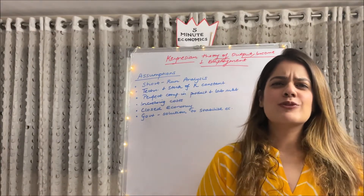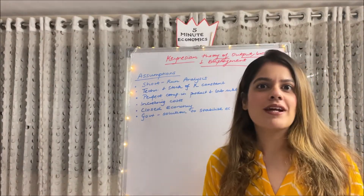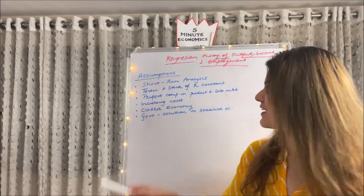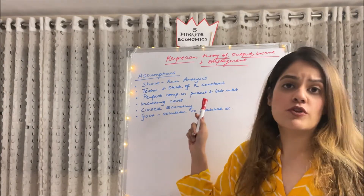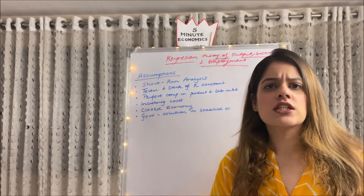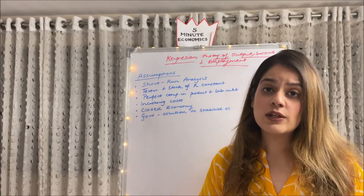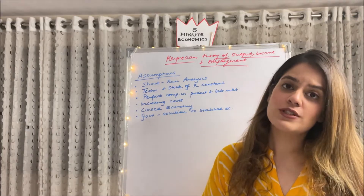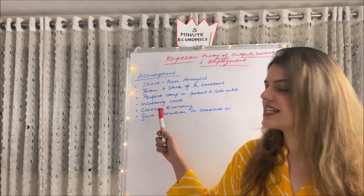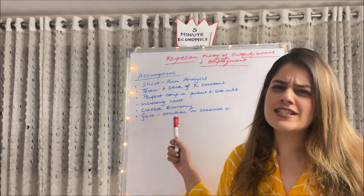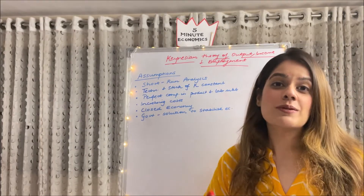Let us quickly run through the assumptions of this theory. Number one, this is a short run analysis, because Keynes believed that in the long run we are all dead. Secondly, technology and stock of capital are constant — they cannot change in the short run. Thirdly, there is perfect competition in product and labor markets. Fourthly, increasing cost: if we produce more, we incur more costs — producing 10 units costs 100 rupees, and producing 20 units costs 200 rupees. It is based on a closed economy, with the foreign sector kept out. Lastly, government is included as a solution to stabilize the economy.